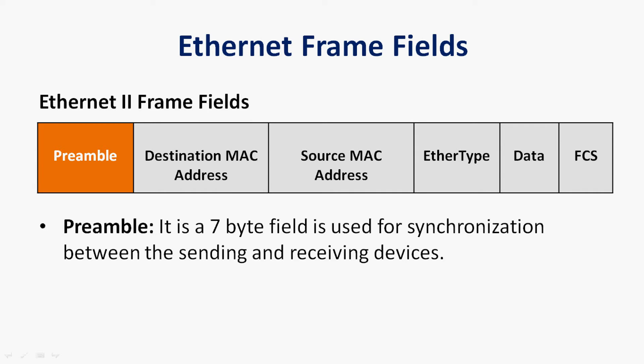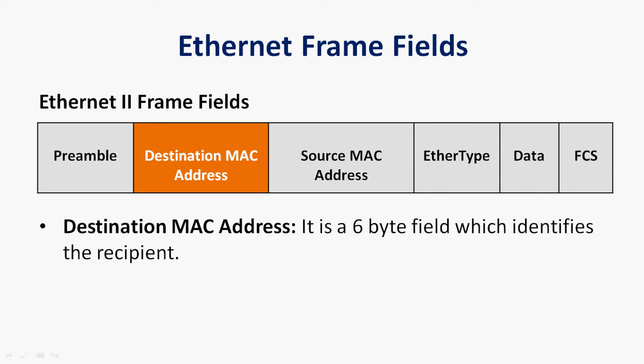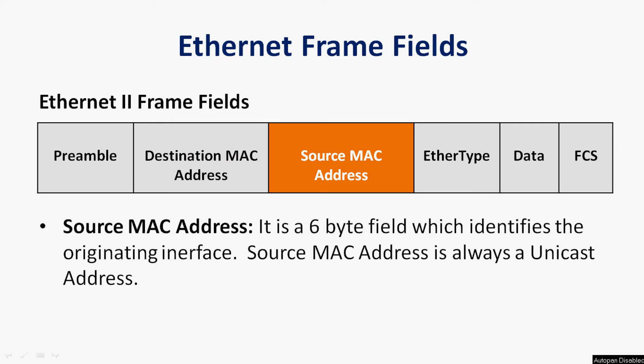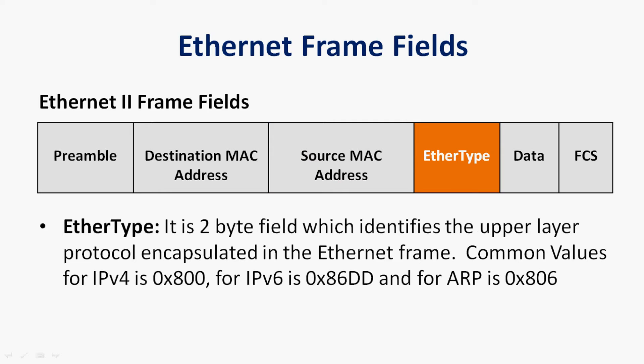The destination MAC address is a 6-byte field which identifies the recipient. The source MAC address is a 6-byte field which identifies the originating interface and is always a unique address. The EtherType is a 2-byte field which identifies the upper layer protocol encapsulated in the Ethernet frame. Common values are: 0x0800 for IPv4 and 0x86DD for IPv6.